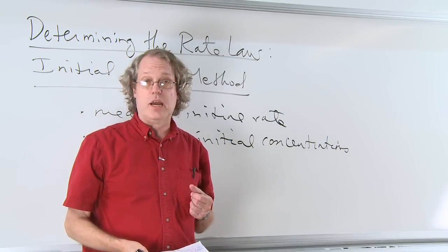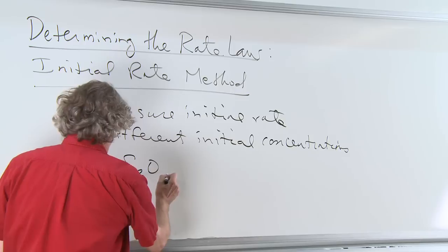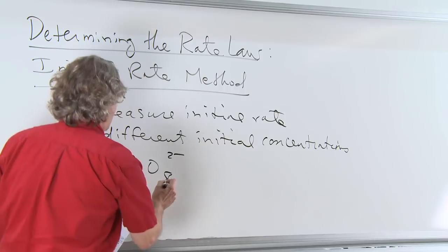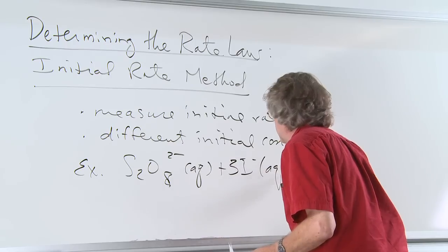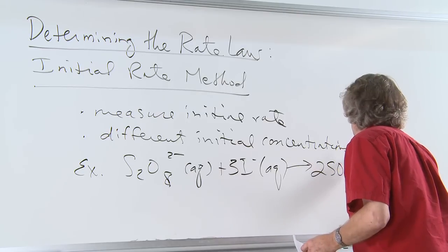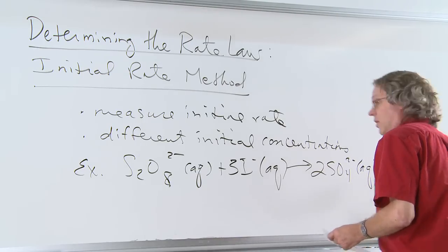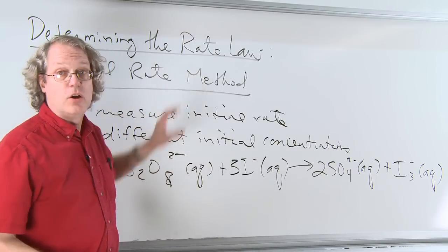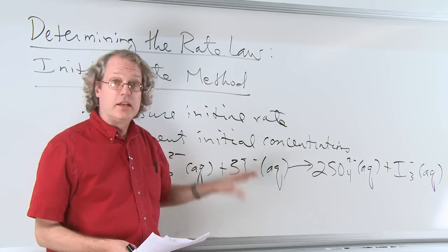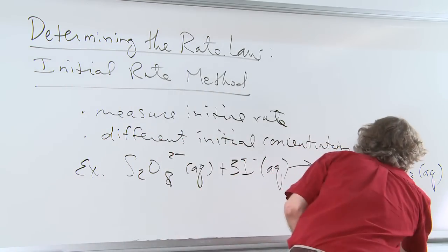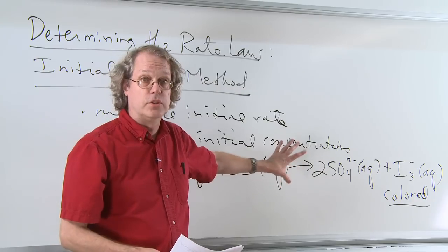We'll look at a classic reaction: the reaction of peroxydisulfate, S2O8 2-, in water with iodide ions in water to make two sulfate ions and the triiodide ion. One of the nice things about this reaction for the initial rate method is that it falls in a time scale that makes it easy to measure experimentally. Most species are not colored, but the triiodide species is colored, so we can use changes in color to measure changes in concentration and rate.